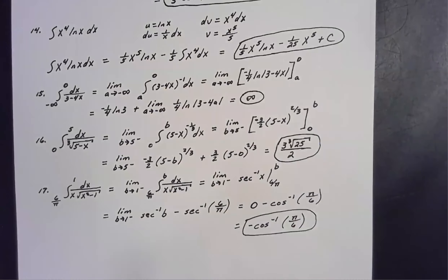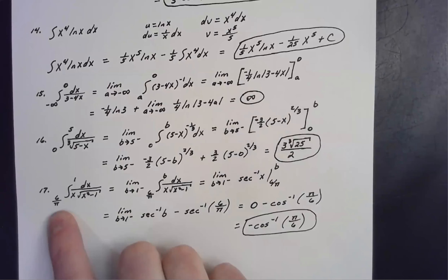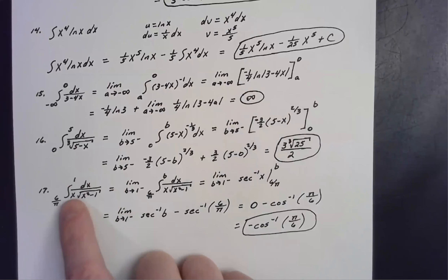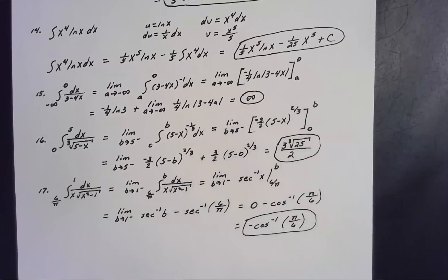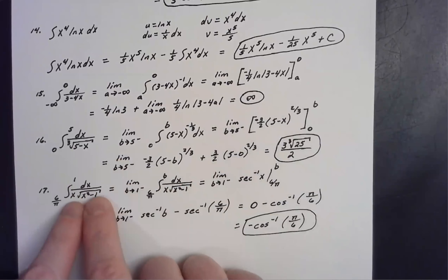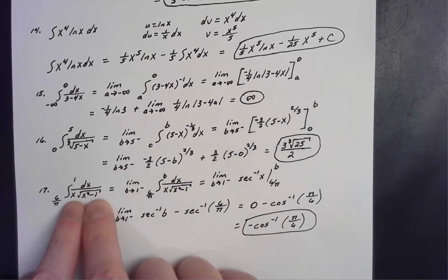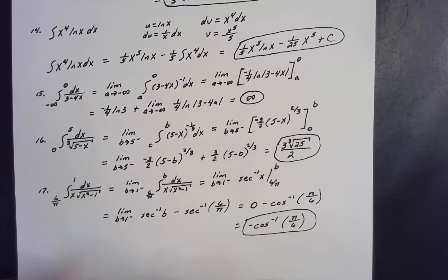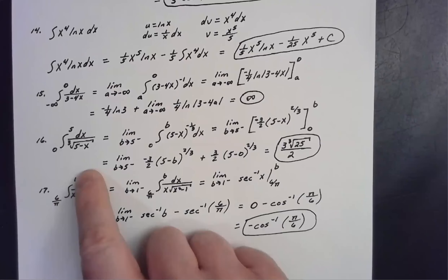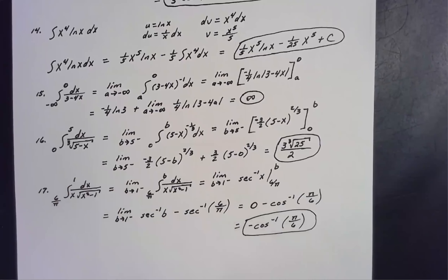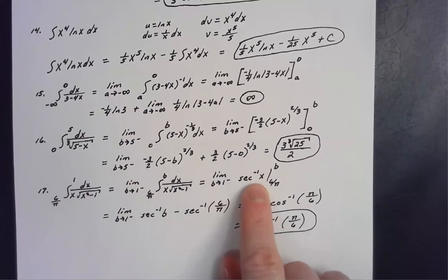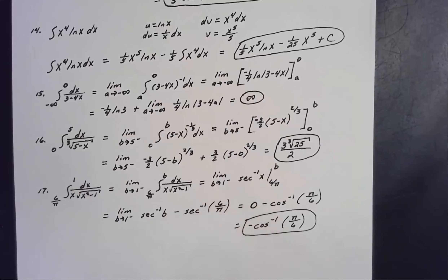For number seventeen, the integral from 6/π up to one of dx over [x√(x² − 1)]. This is just the inverse secant of x. The absolute value around x is unnecessary here since all limits of integration are positive. So this integrates easily to the inverse secant of x.